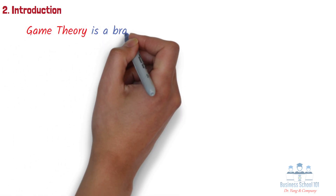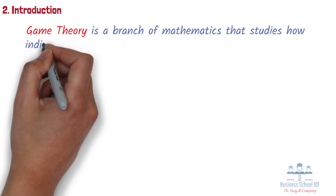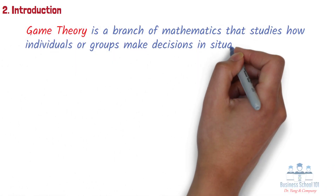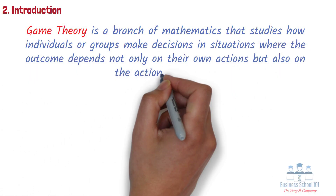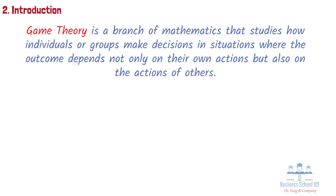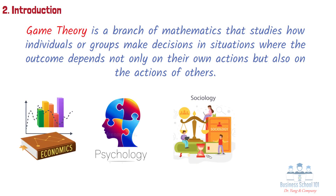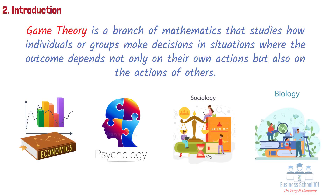Game theory is a branch of mathematics that studies how individuals or groups make decisions in situations where the outcome depends not only on their own actions, but also on the actions of others. The main goal of game theory is to identify the optimal strategies for each player in a given situation, taking into account the actions and strategies of other players. Besides the business field, game theory has a wide range of applications in fields such as economics, psychology, sociology, and biology, among others.